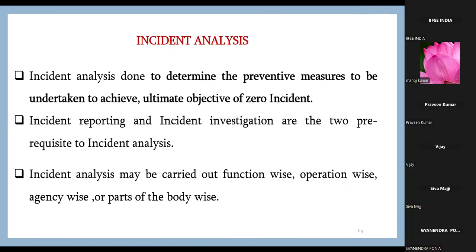Every organization's QHSE policy states a zero incident policy, but practically it is not possible. Some managements suppress facts to show a better picture. For incident analysis, there are two prerequisites: first the incident must be investigated and reported. Then you can analyze. The frequency rate (FR) is the number of disabling injuries per two lakh man-hours worked — the new method calculates frequency rate for every two lakh man-hours.